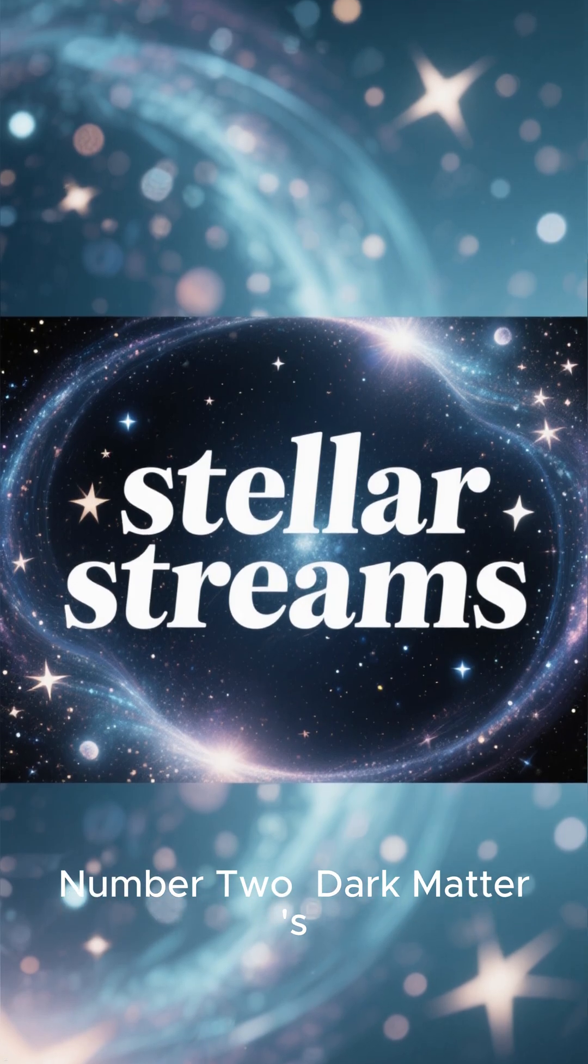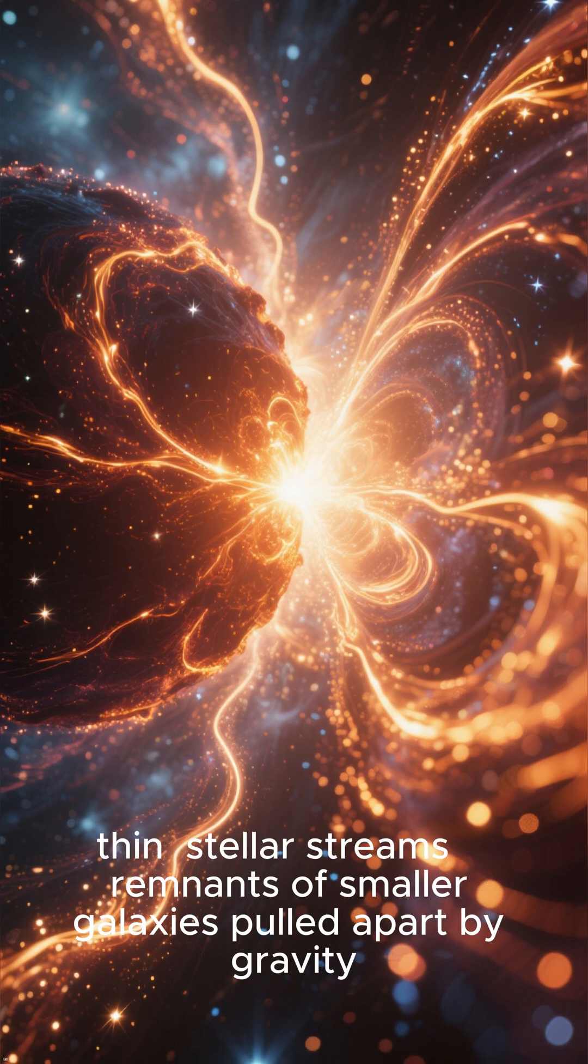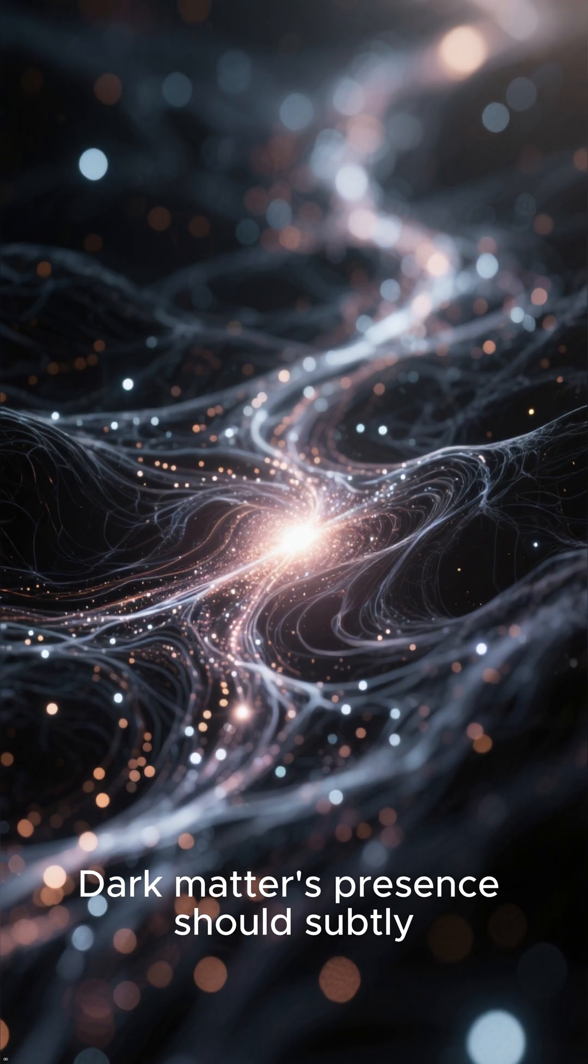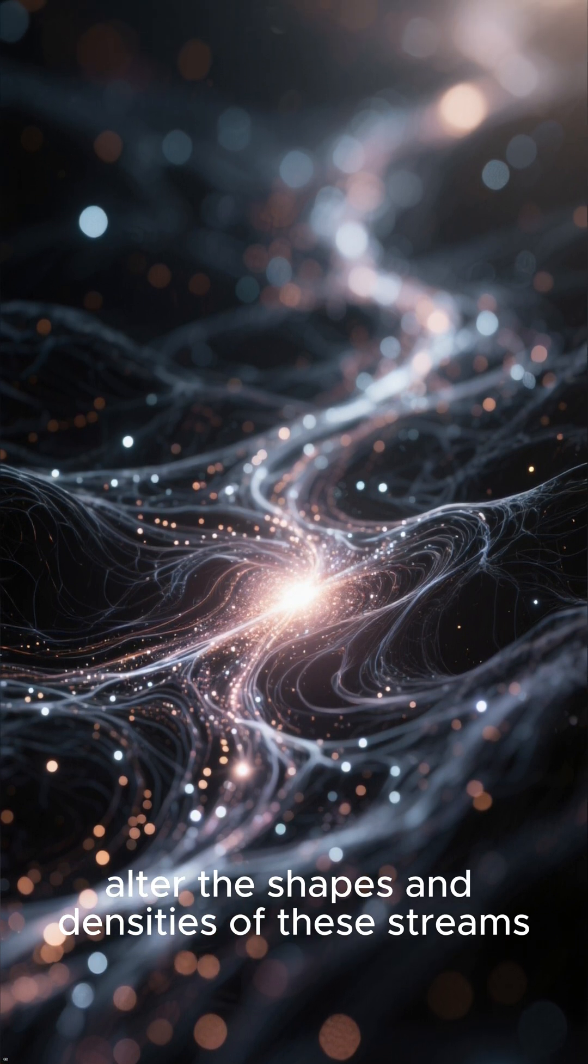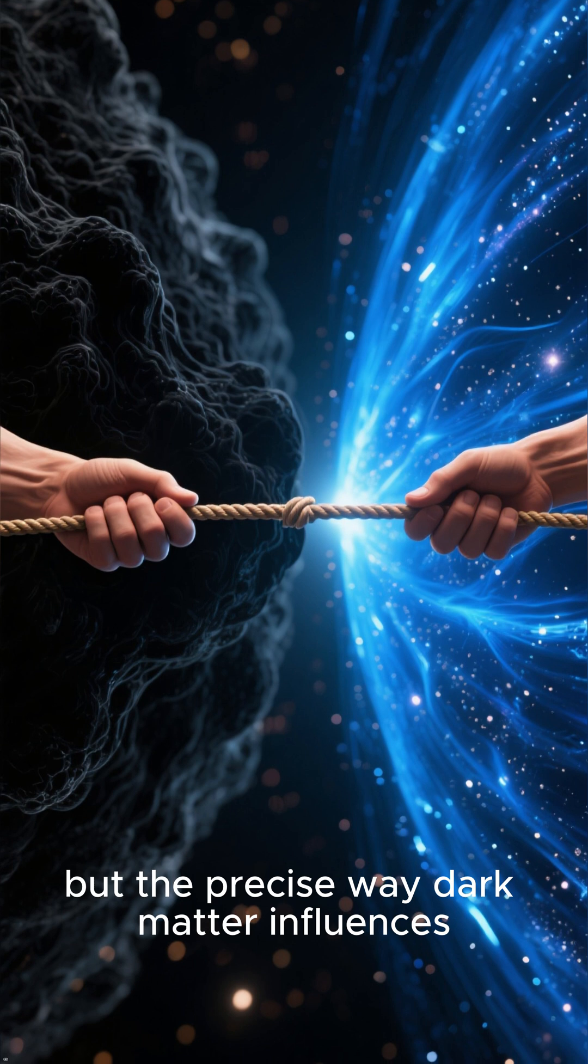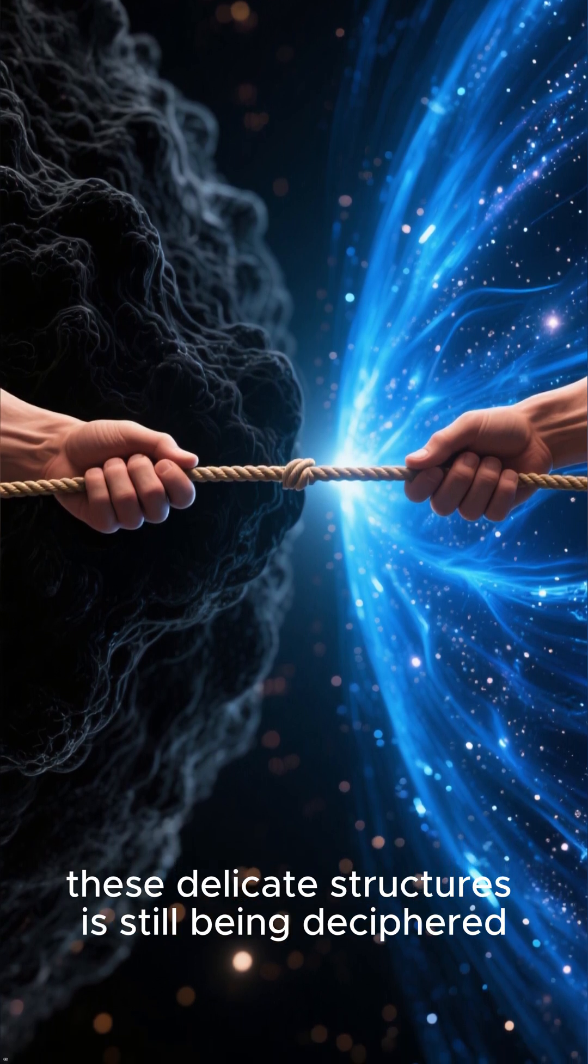Number 2: Dark matter's effect on stellar streams. As galaxies merge, they leave behind long, thin stellar streams, remnants of smaller galaxies pulled apart by gravity. Dark matter's presence should subtly alter the shapes and densities of these streams. Observing these distortions gives us clues, but the precise way dark matter influences these delicate structures is still being deciphered. A Cosmic Tug-of-War.